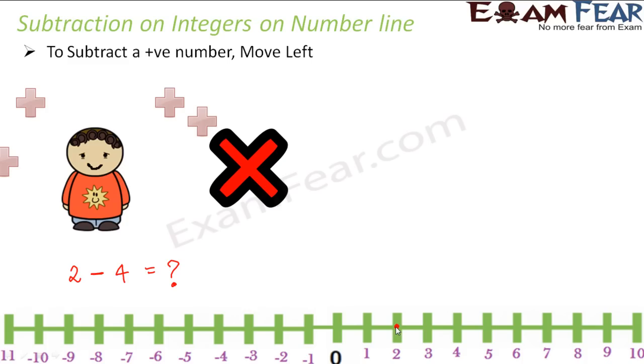So from 2 you are subtracting a positive number. So you are going to move towards left. So how many jumps towards left? 4 jumps towards left. 1, 2, 3 and 4.